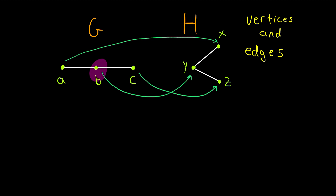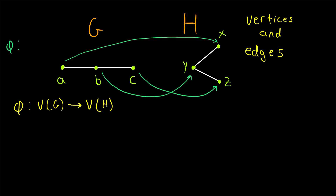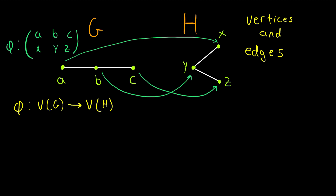For example, the vertex B in G has two neighbors, and the vertex that B is matched to in H also has two neighbors. So to start formalizing this idea, when we say that a graph G is isomorphic to a graph H, we're saying that there's some function phi that takes vertices from G and sends them or matches them up to vertices in H. The function we've drawn here sends A to X, B to Y, and C to Z.